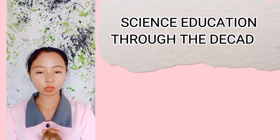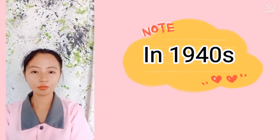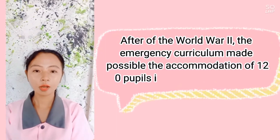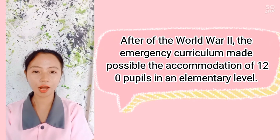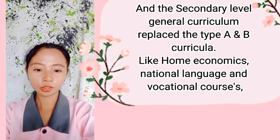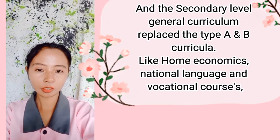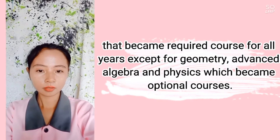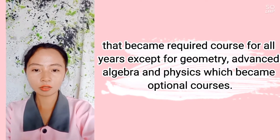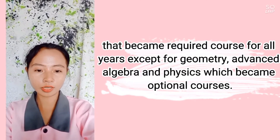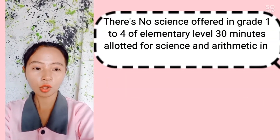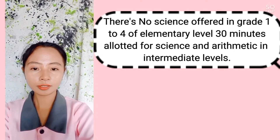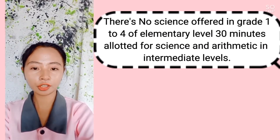Science Education Through the Decades. In the 1940s, after World War II, the emergency curriculum made possible the accommodation of 120 pupils at the elementary level. In the secondary level, a general curriculum replaced the Type A and B curricula. Home economics, national language, and vocational courses became required courses for all years, except geometry, advanced algebra, and physics, which became optional. There was no science offered in grades 1 to 4 at the elementary level, with 30 minutes allotted for science and arithmetic at the intermediate levels.